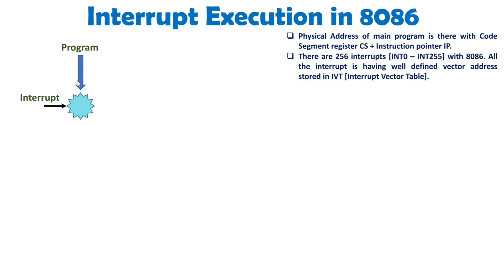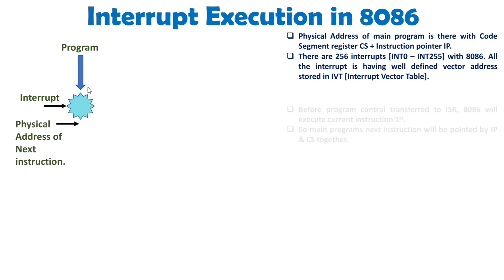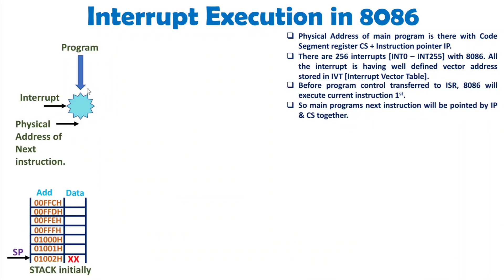While executing the main program, if an interrupt comes, first 8086 must complete the current instruction being executed. After that, there are two key things to consider: the status of the program, which is held in the flag register, and the next instruction address, which is held in CS (higher address) and IP (lower address). Both the status and the physical address of the next instruction need to be stored on the stack.